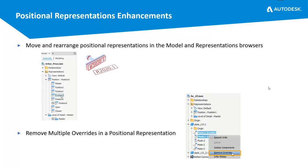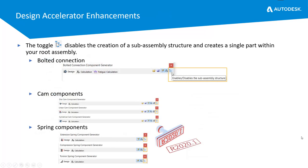Positional representations have had changes in the 2020.1 release: you can now drag positional reps around to any order, and you can multi-select overrides or multi-select to remove overrides from your positional reps. Design accelerators have a new toggle which enables or disables the sub-assembly structure, and this works with cam, bolted connection, and spring components.